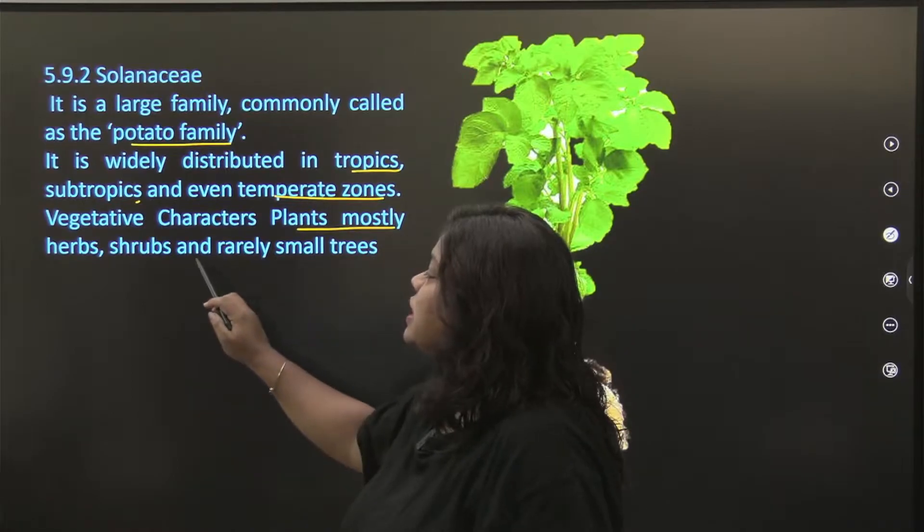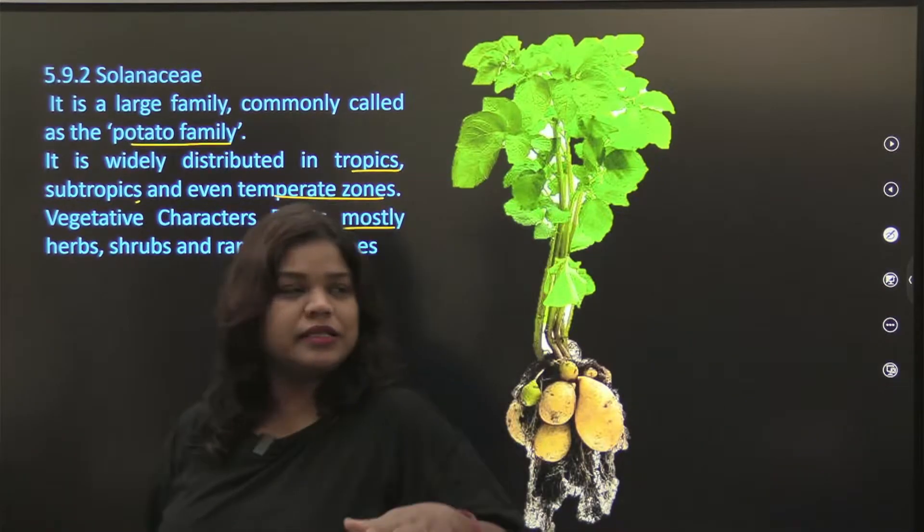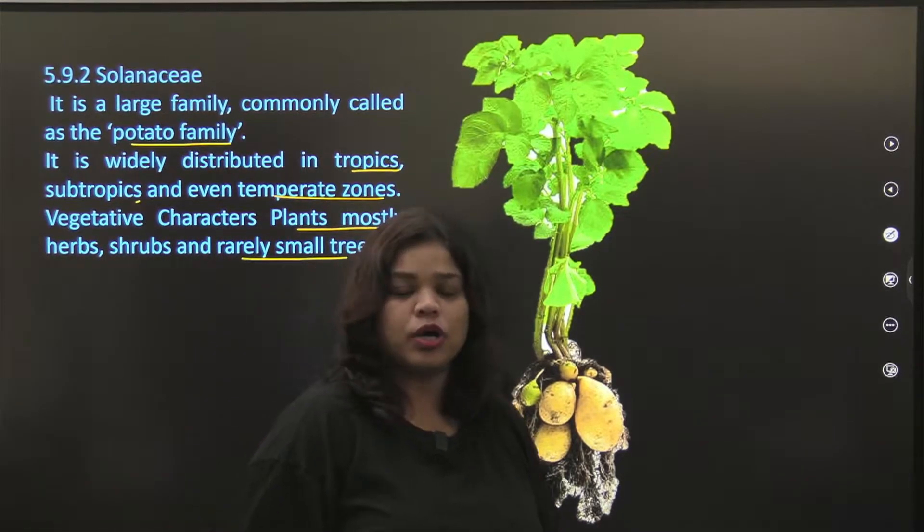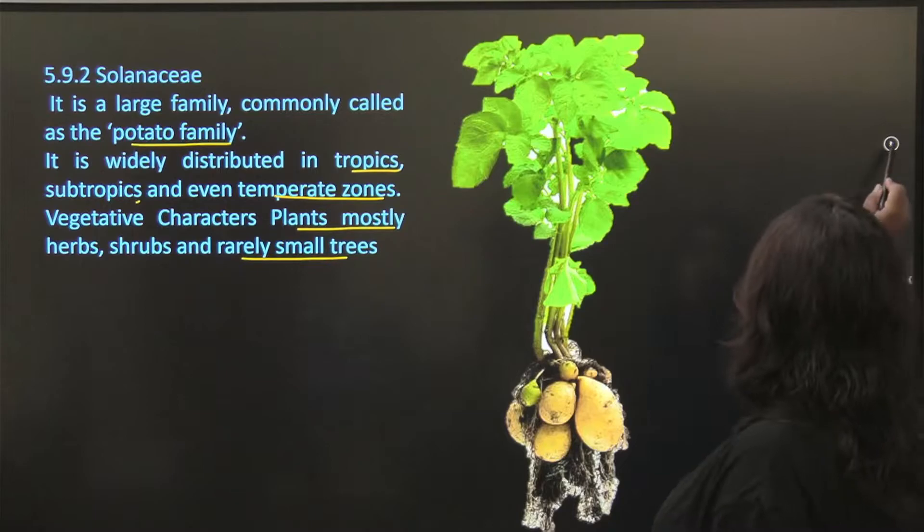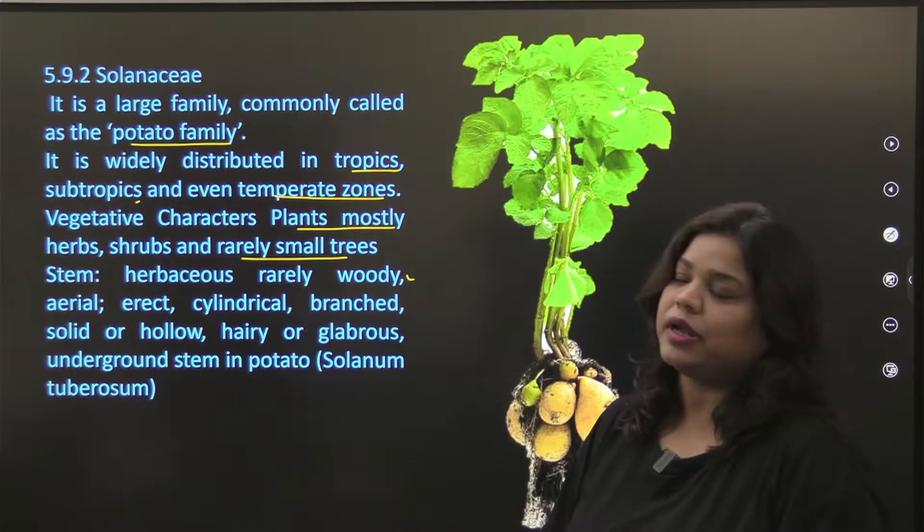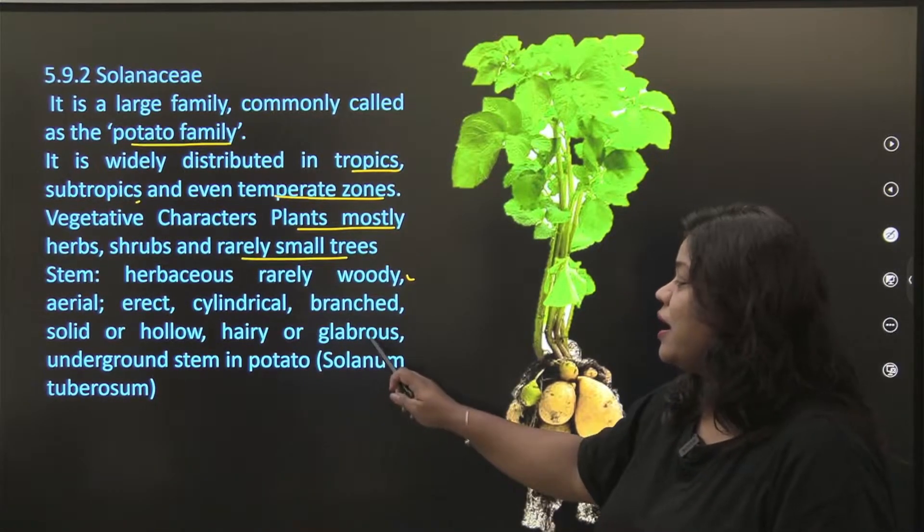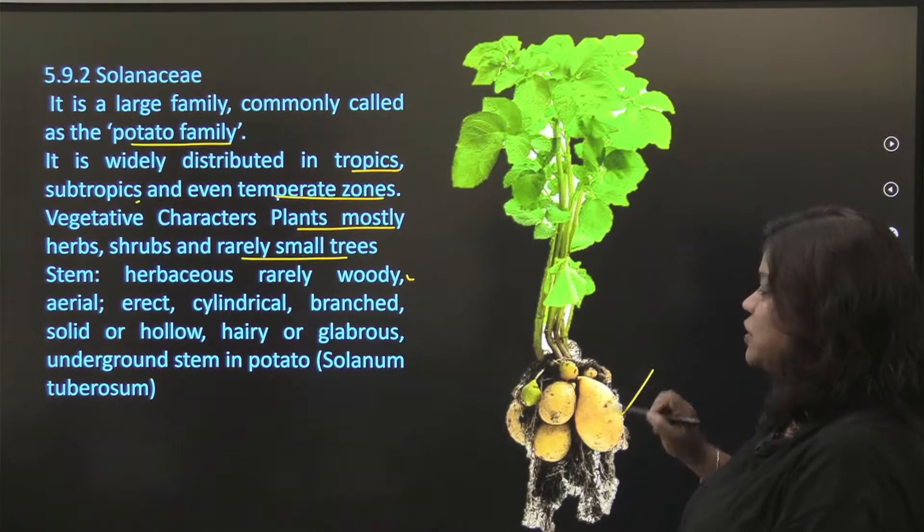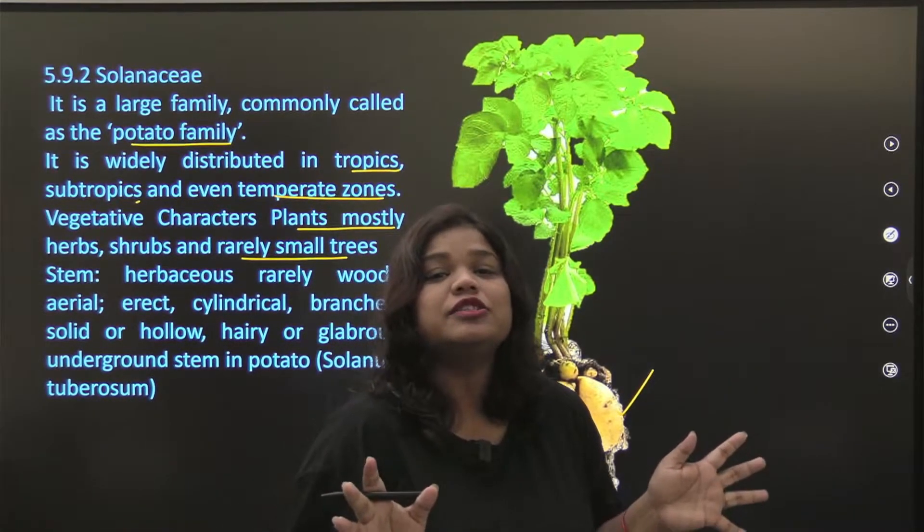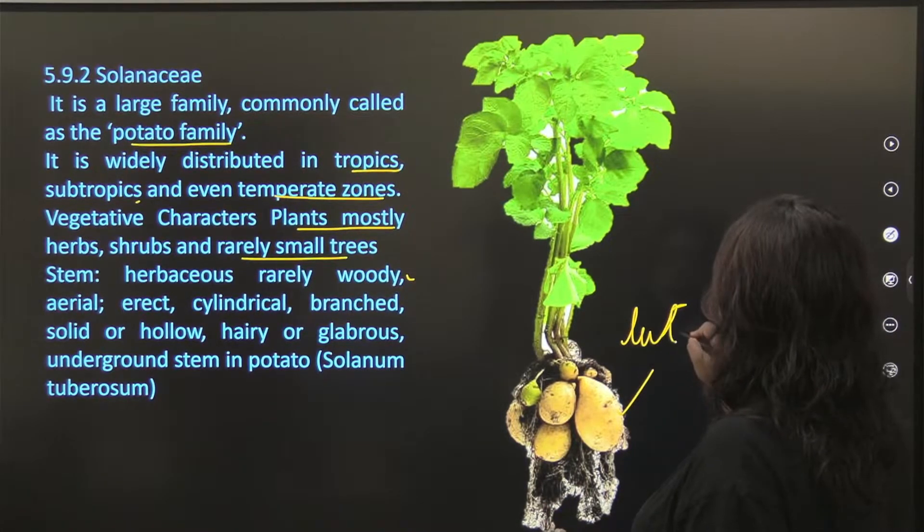Vegetative characters. Plants mostly herbs, shrubs and rarely small trees. That means you will find herbs and shrubs. If you have seen aloo, this part is going inside your soil. That means it will not be very thin or very long plants. There will be small trees, herbs and shrubs. Stem herbaceous, rarely woody. Woody stem will get very rarely here. Aerial, erect, cylindrical, branched, hollow, solid, hairy, glabrous. Underground stem in potato, Solanum tuberosum.